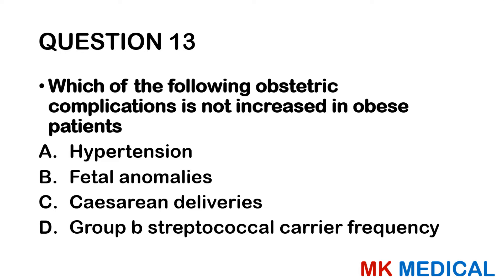Question 32: Which is an example of an indirect maternal death? A — septic shock following an abortion. B — aspiration following an eclamptic seizure. C — hemorrhage following a ruptured ectopic pregnancy. D — aortic rupture at 36 weeks in a patient with an aortic aneurysm. Septic abortion, aspiration from eclampsia, and ruptured ectopic hemorrhage are all direct causes. An aortic rupture due to a pre-existing aneurysm is not directly caused by the pregnancy. The answer is D.